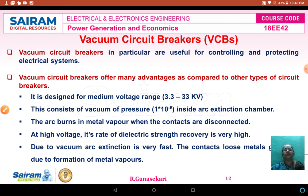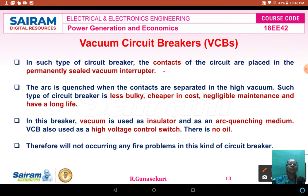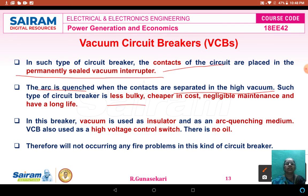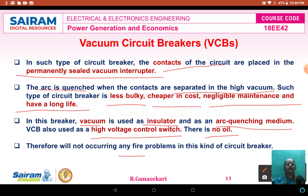Continuing vacuum circuit breaker: in this type of circuit breaker, the contacts are placed in a permanently sealed vacuum interrupter, and the arc is extinguished when the contacts are separated in high vacuum. The advantage of vacuum circuit breakers is that they are less bulky, cheaper in cost, require negligible maintenance, and have longer life. The vacuum is used as an insulator and as an arc extinction medium. No oil is used in the vacuum circuit breaker, therefore no fire problem occurs.